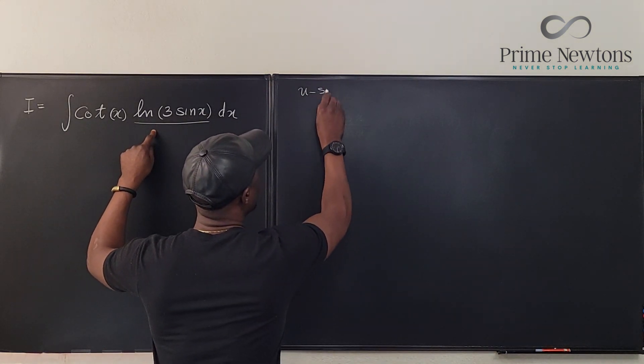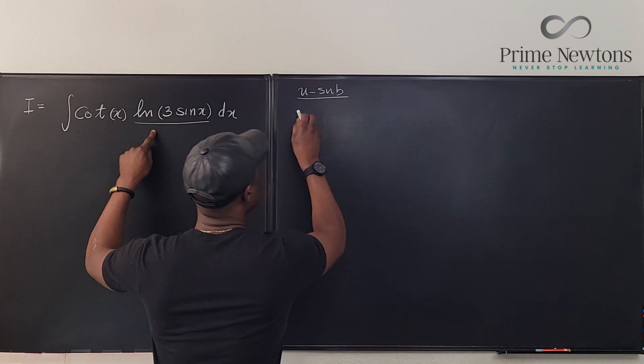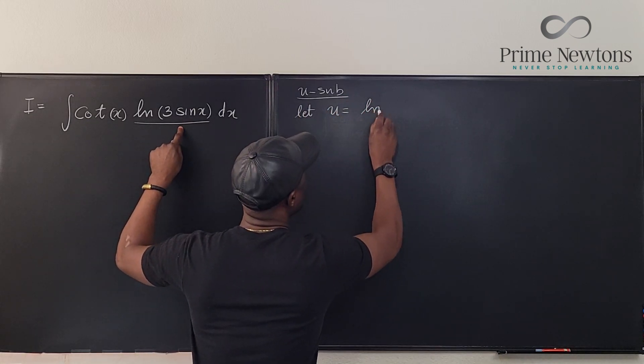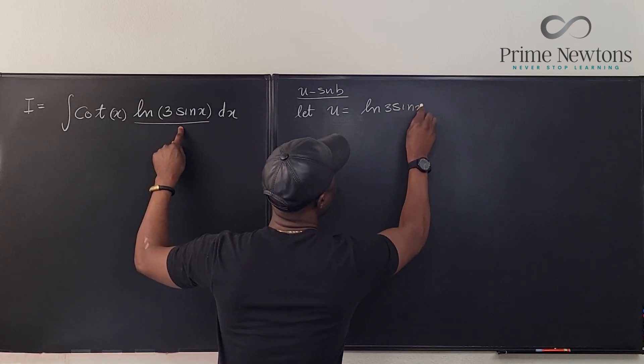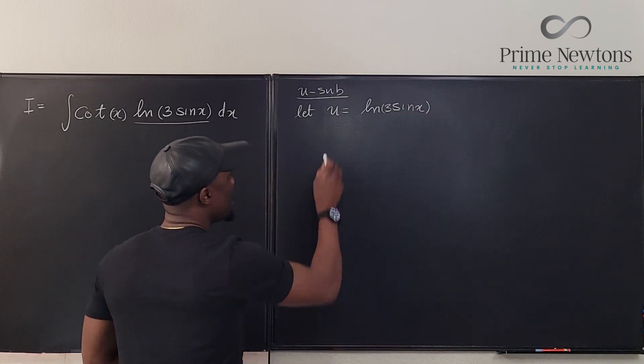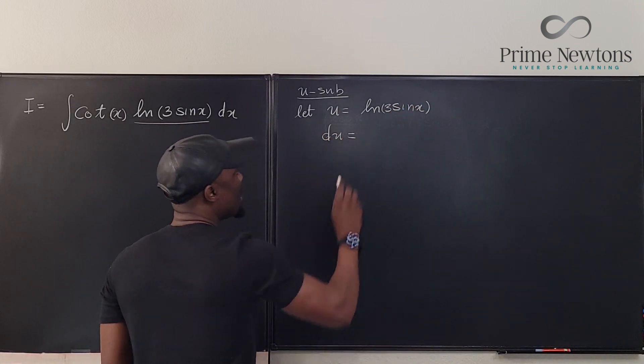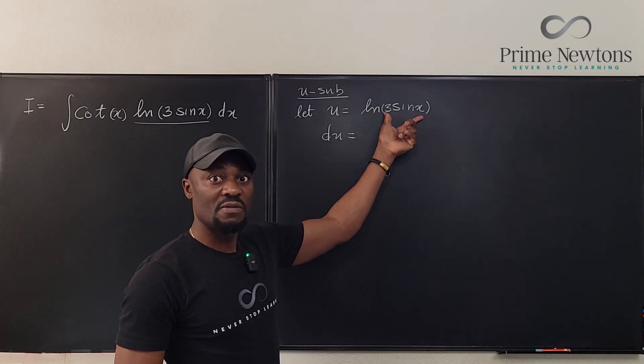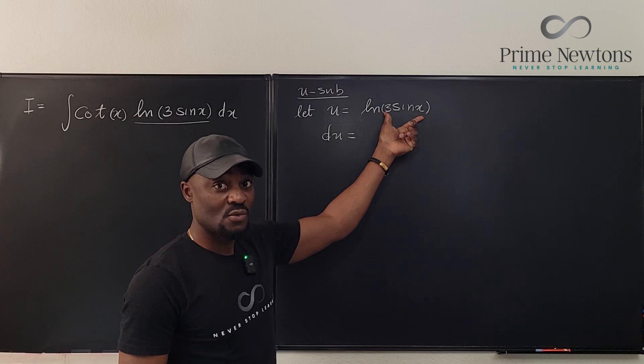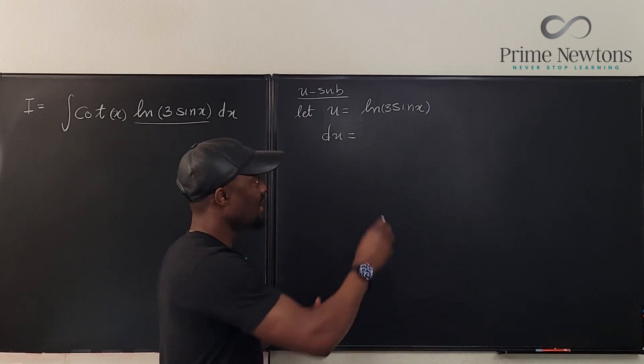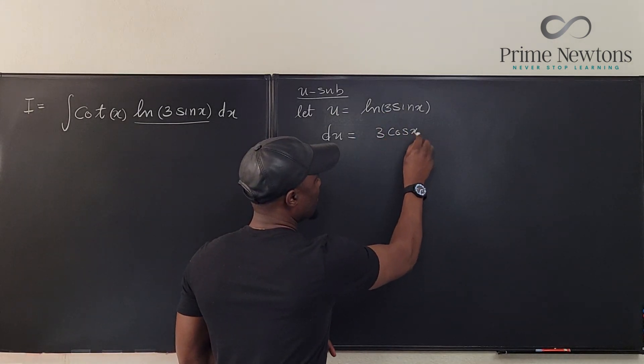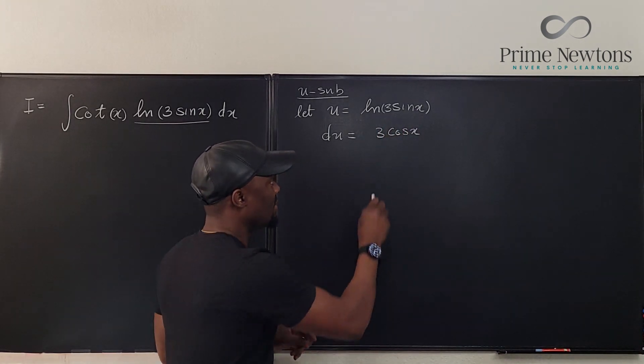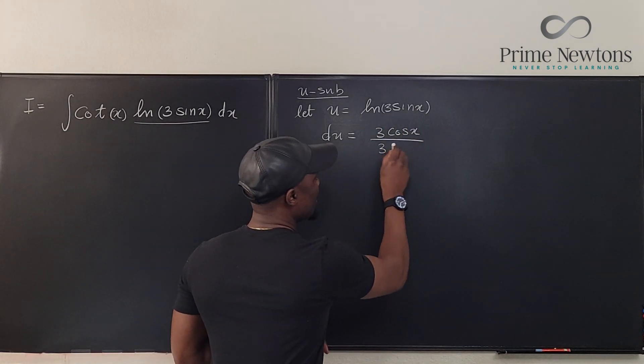We're going to say u sub: let u be equal to ln of 3 sin x. If we take du—remember, the derivative of a natural log function is the derivative of the argument of that function. What is the derivative of this? It's 3 cosine x divided by the argument itself, 3 sin x.